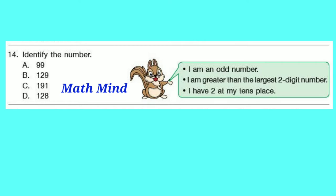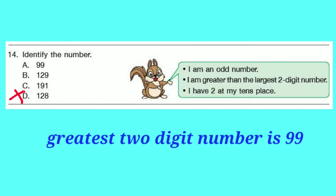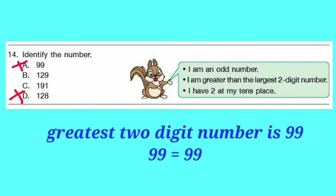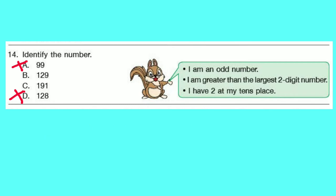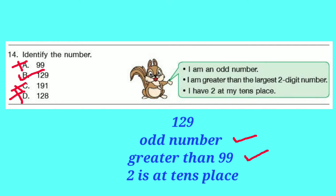Question number 14: Identify the number. Statement 1: I am an odd number — so option D is cancelled. Statement 2: I am greater than the greatest two-digit number. The greatest two-digit number is 99, so option A is cancelled (99 is not greater than 99; both are equal). Statement 3: I have 2 at my tens place. From options B and C, only B is correct — C is cancelled. The answer is 129: it is odd, greater than 99, and has 2 at the tens place.